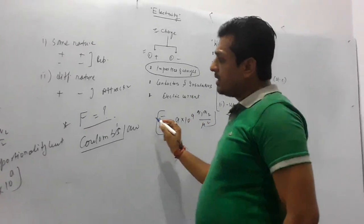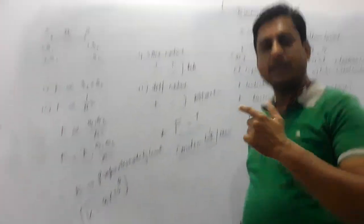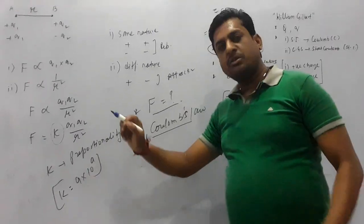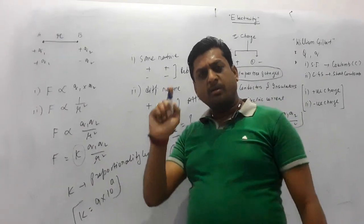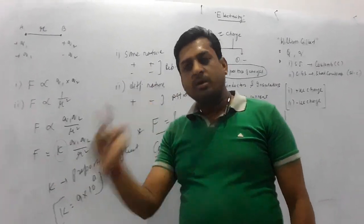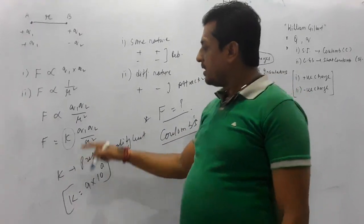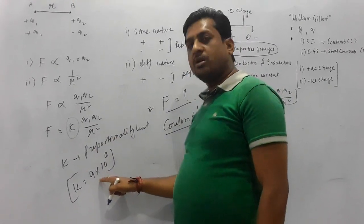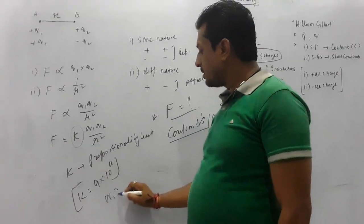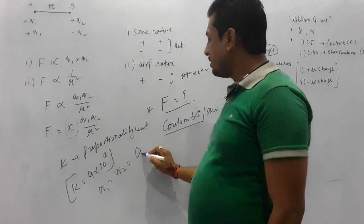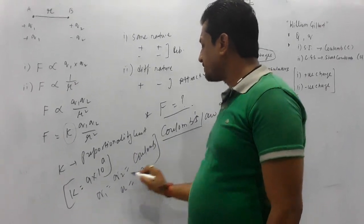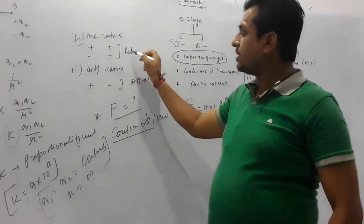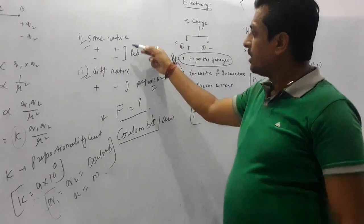There are many things upon which this constant value depends — you will study that in class 12. The value of k is not fixed because it depends on the medium and the system of units. But for your standard, the value of k is 9×10⁹ when the charges q1 and q2 are measured in coulombs and distance is measured in metres.